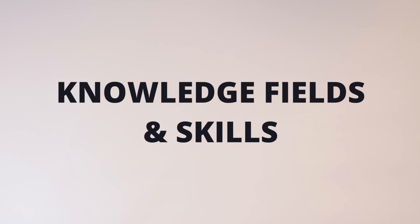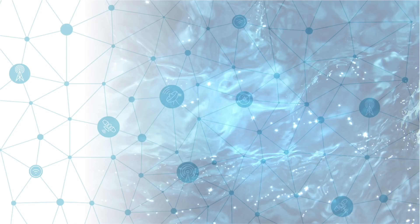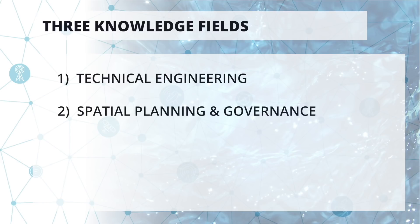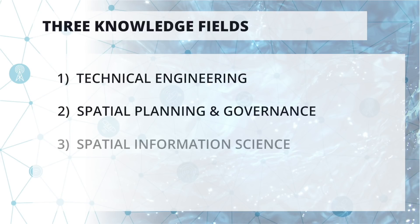To solve these problems — to go from a very wicked situation to a tame situation — we think you always need three knowledge fields. One is the technical side: civil engineering, geoengineering. Two is the spatial planning and governance side, to deal with stakeholders. And three is the spatial information science and remote sensing that feeds into the other two knowledge fields. You need all three of them, and in this study we will teach all three at the same level.